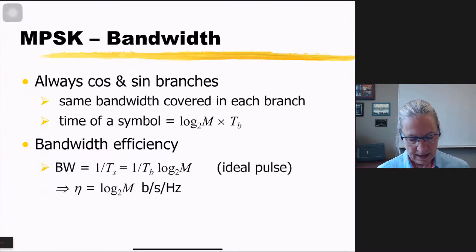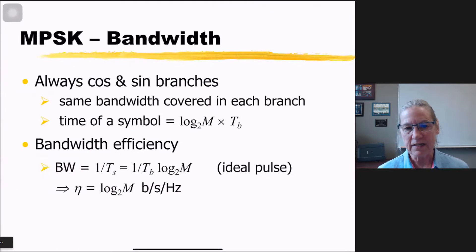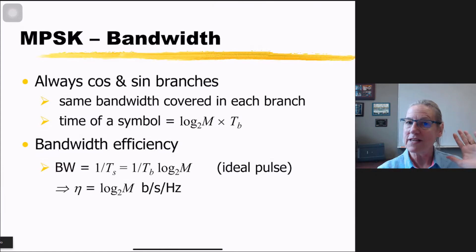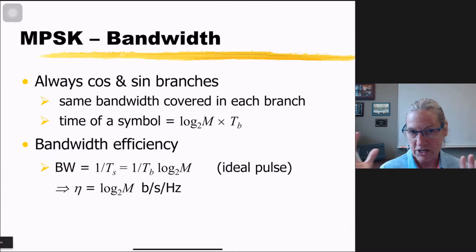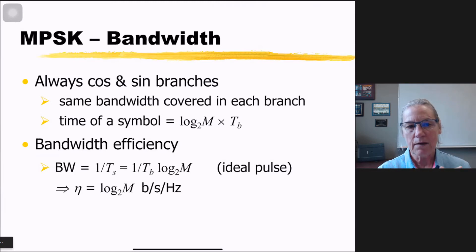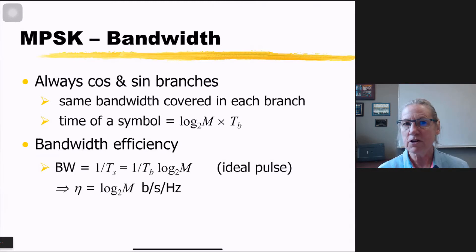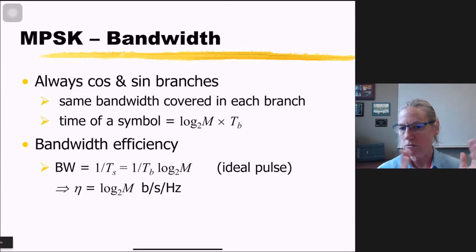As we go up to M-ary signaling, the same argument about cosine and sine applies — there are still just two branches in the receiver, and the bandwidth is always superimposed at one carrier frequency.